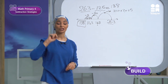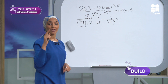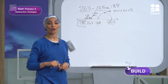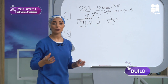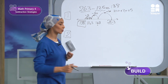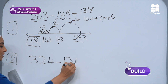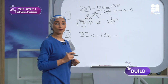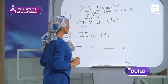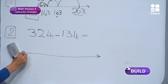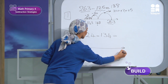Now we will use the second strategy: counting up with decomposition. Here we will do something different. The example is 324 minus 134. This time I will start from the small number and work up to the big number. So I will write the small number, 134, here on the number line. I want to reach 324.